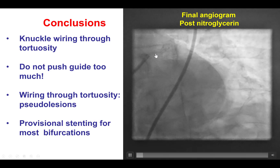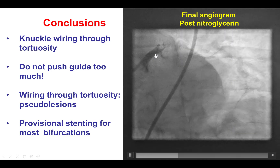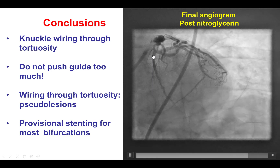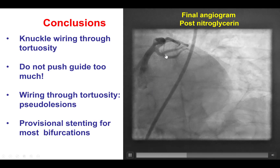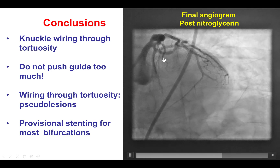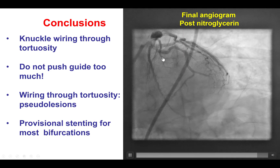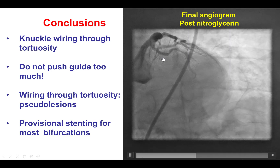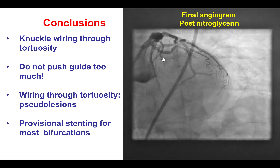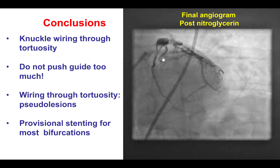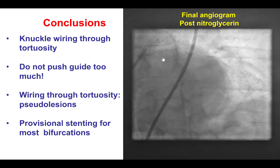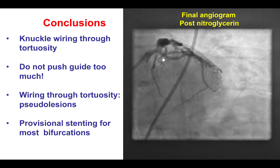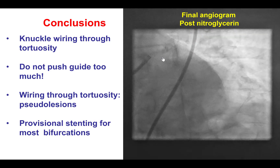Once again, the provisional strategy is the preferred technique for most bifurcations, but when both the main vessel and the side branch have significant disease and there is significant risk for losing the side branch, an up-front two-stent technique may be needed.